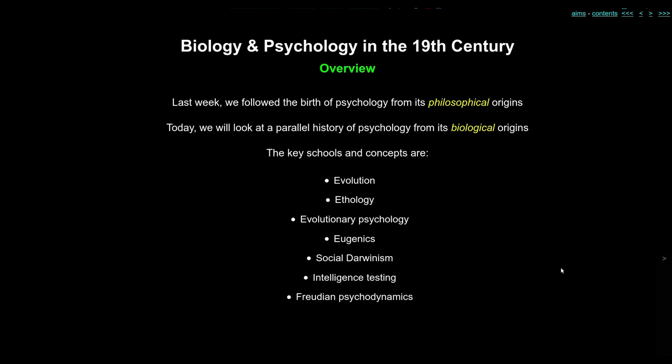Along the way, the key schools and concepts are going to be evolutionary theory, ethology, evolutionary psychology, eugenics, social Darwinism, intelligence testing, and just for good measure right at the end, not quite related but we've got to chuck it in somewhere, Freudian psychodynamics.